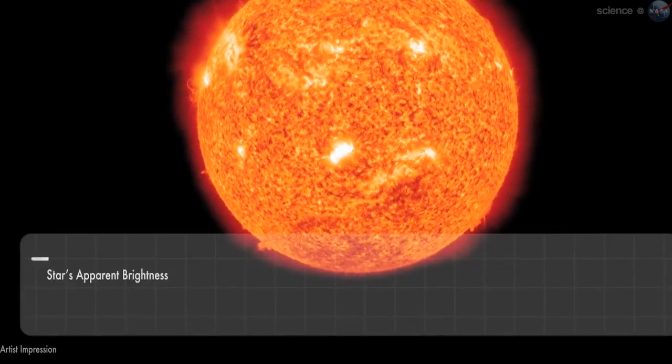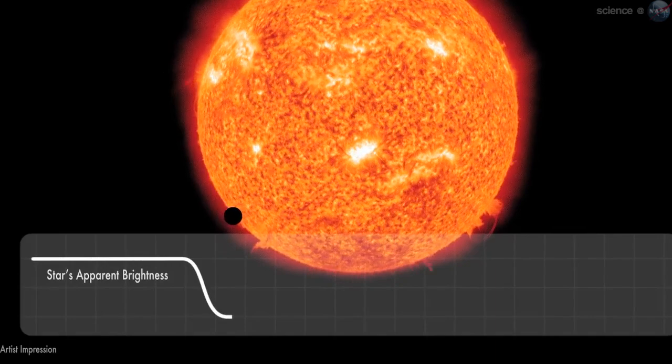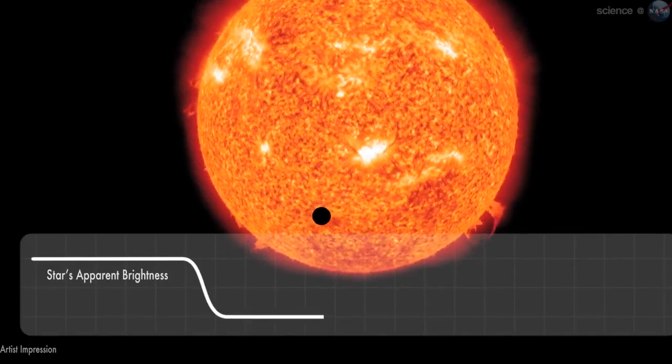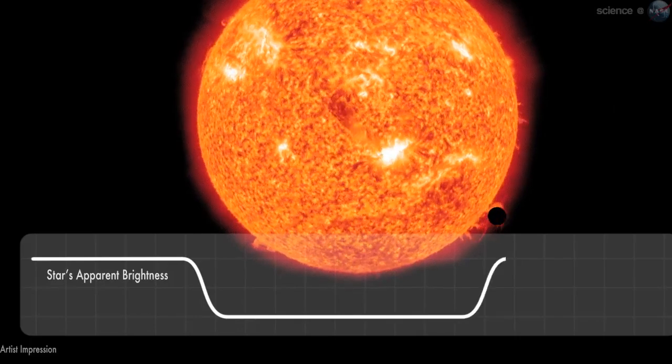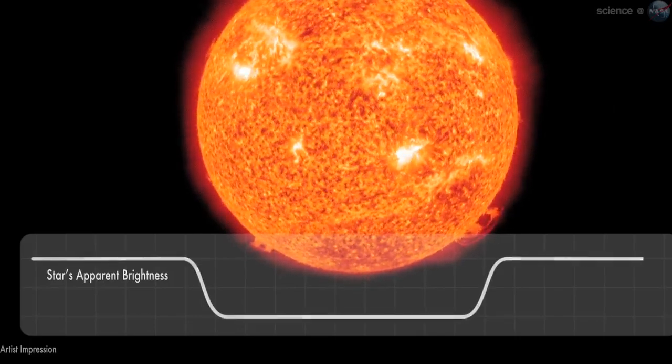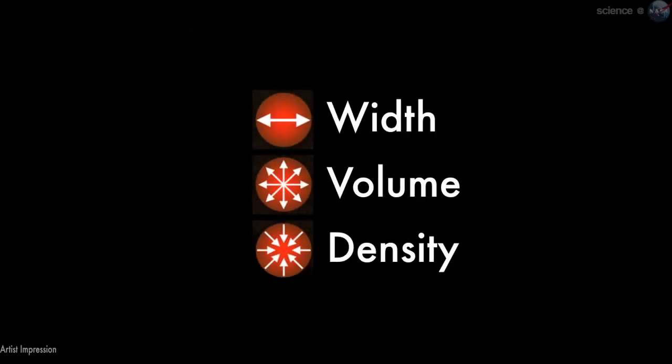Spitzer recently measured the extraordinarily small amount of light 55 Cancri e blocks when it crosses in front of its star. These transits occur every 18 hours, giving researchers repeated opportunities to gather the data they need to estimate the width, volume, and density of the planet.